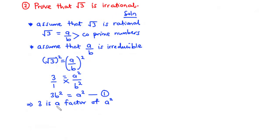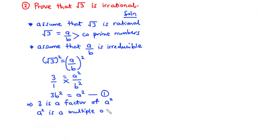If 3 is a factor of a squared, then it also means that a squared is a multiple of 3.